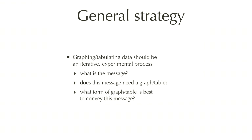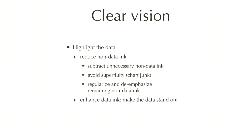Clear vision is all about highlighting the data. Highlighting the data has two parts: reducing the stuff that is non-data, called non-data ink, and enhancing the stuff that is data, called data ink. Reducing non-data ink is about subtracting stuff you don't need, avoiding superfluity — or more popularly called chart junk.